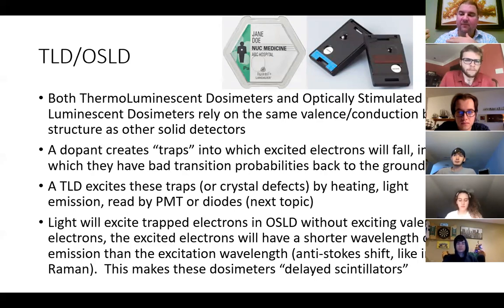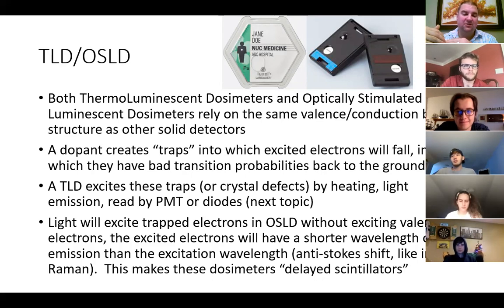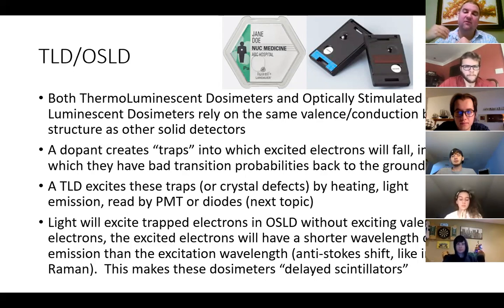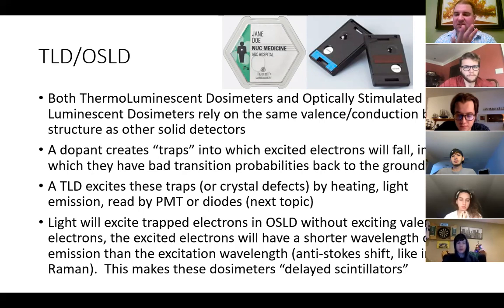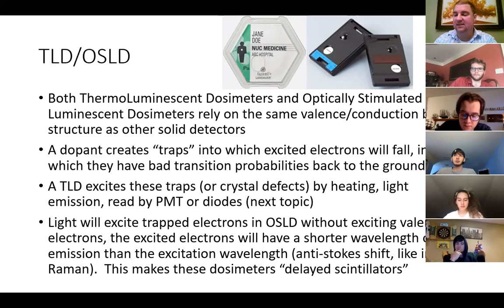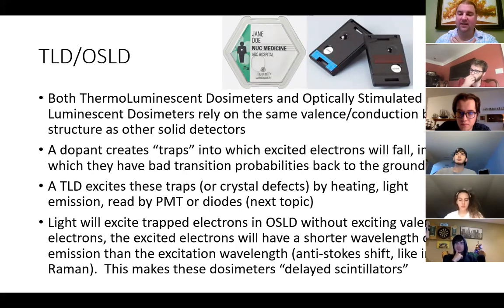When the electrons fall all the way back to the valence band, they emit light. That emitted light has a shorter wavelength and higher energy than the excitation light — this is an anti-Stokes shift. You are getting more energy out than you put in with the excitation because the crystal already had energy deposited by radiation during the original exposure. This makes these dosimeters essentially delayed scintillators, analogous to phosphorescence with an extremely long lifetime — no light is emitted until the trapped electrons are re-excited.